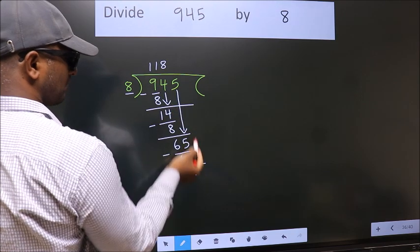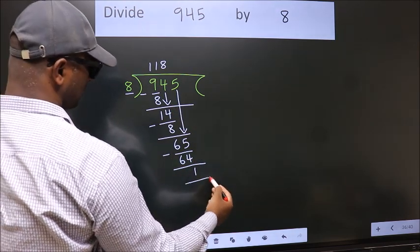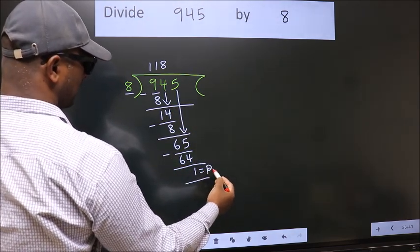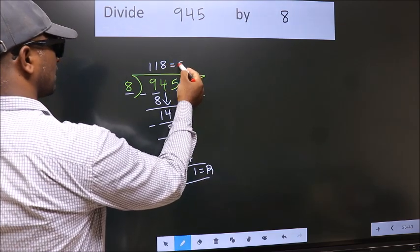No more numbers to bring it down. So we stop here. This is our remainder. This is our quotient.